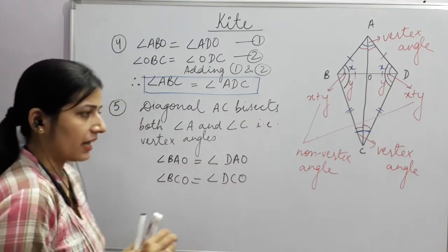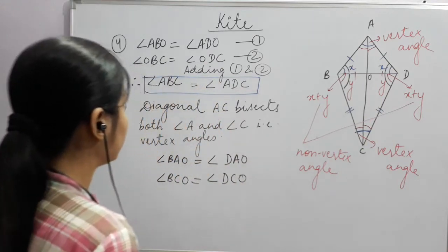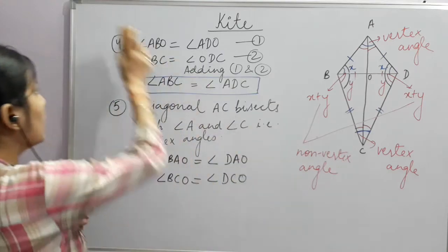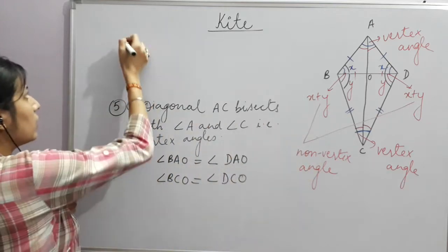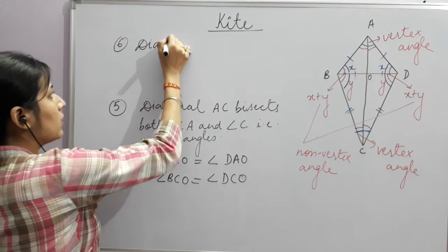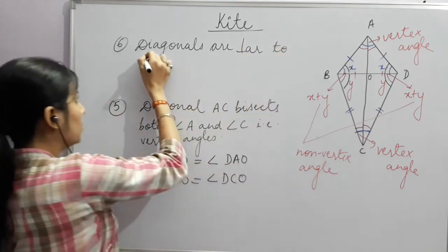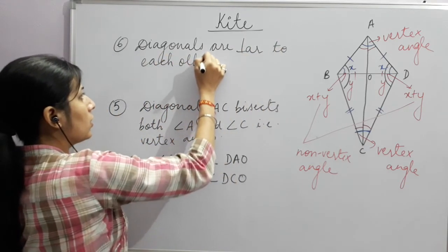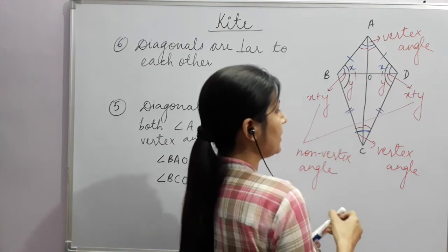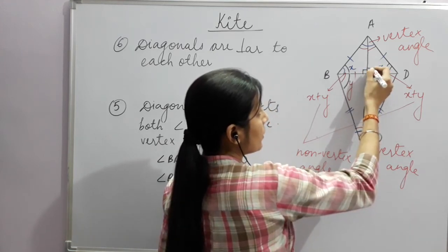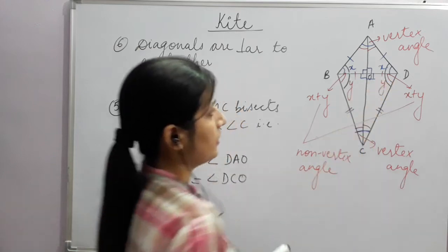Now, the diagonals of a kite intersect each other at right angles — they are perpendicular to each other. Where the diagonals cut each other, they form a 90-degree angle. Since one angle is 90 degrees, all four angles at the intersection point automatically become 90 degrees.